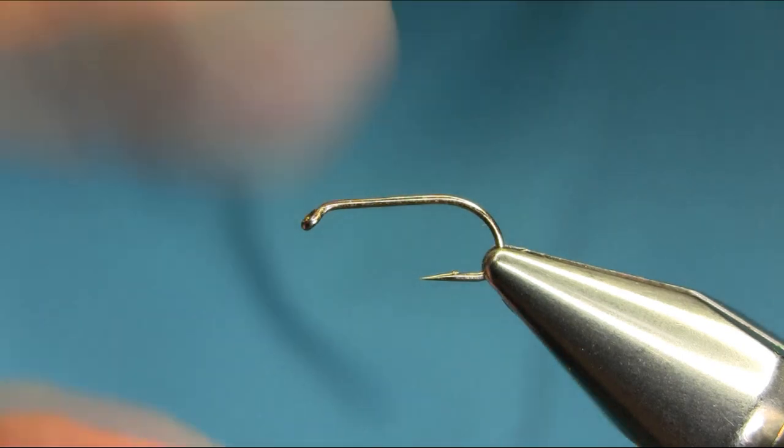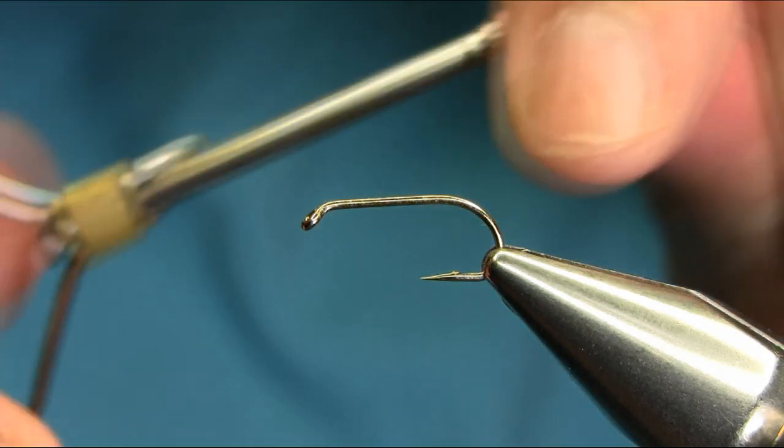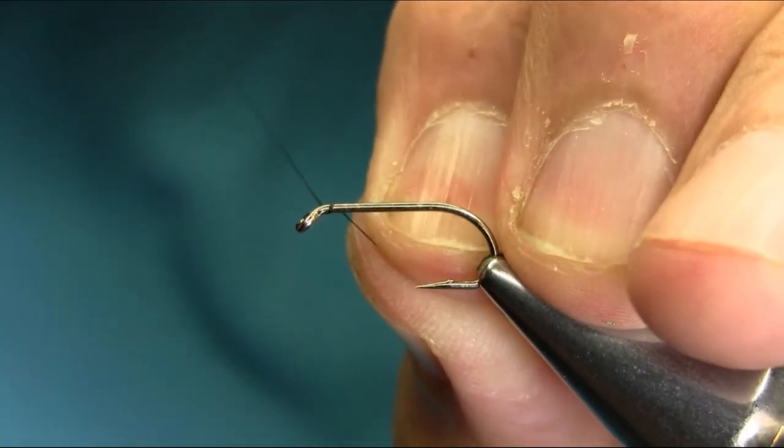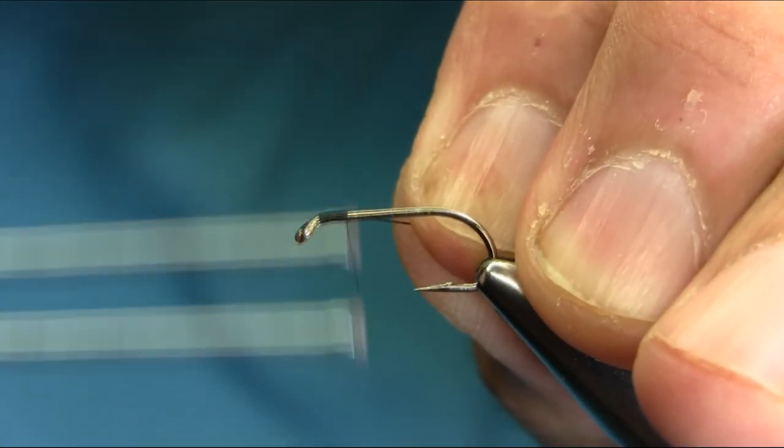Hi everyone, this is size 10 straight shank hook and thread I'm using is black 80. Just as usual, just start below the eye touching turn.